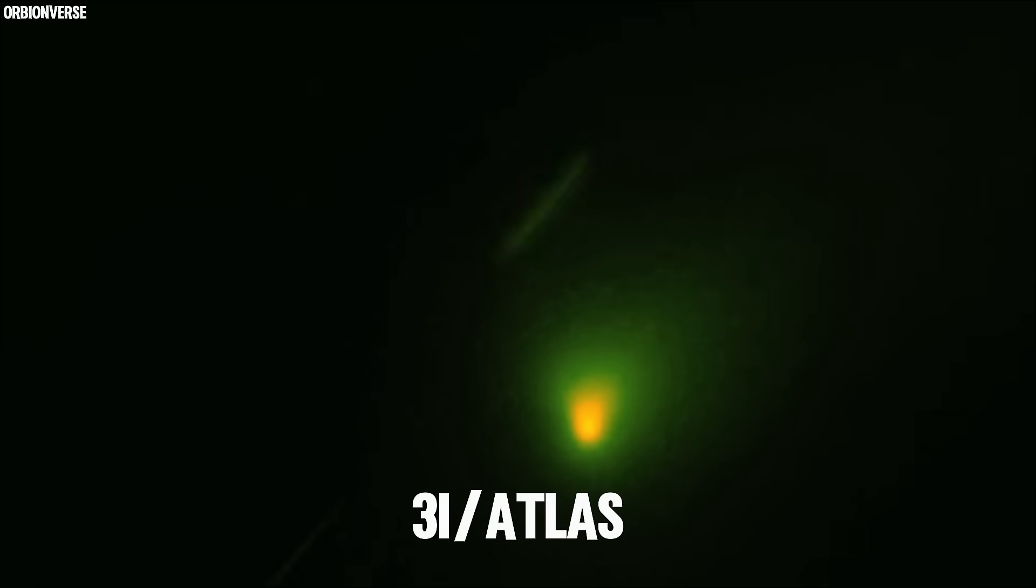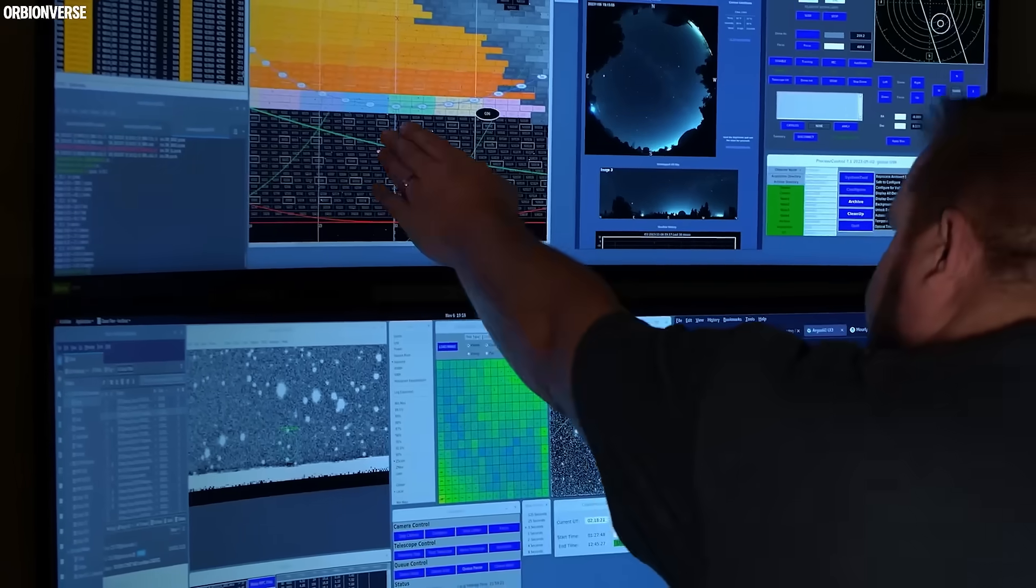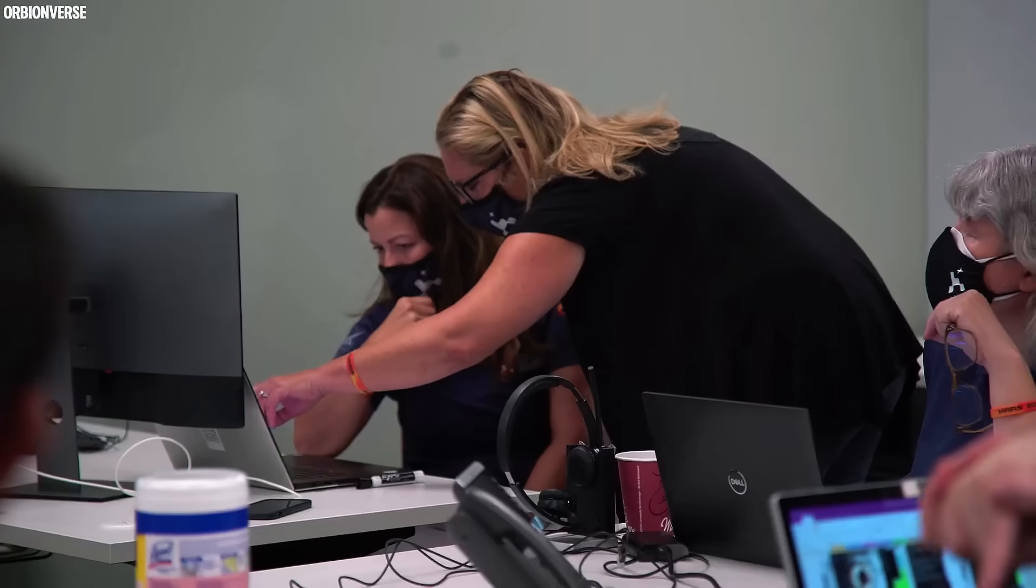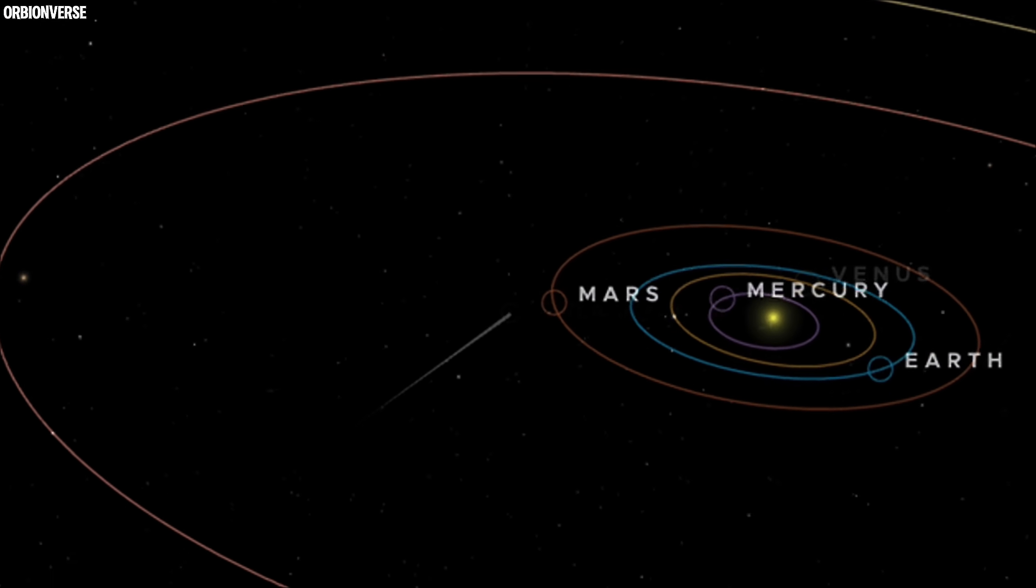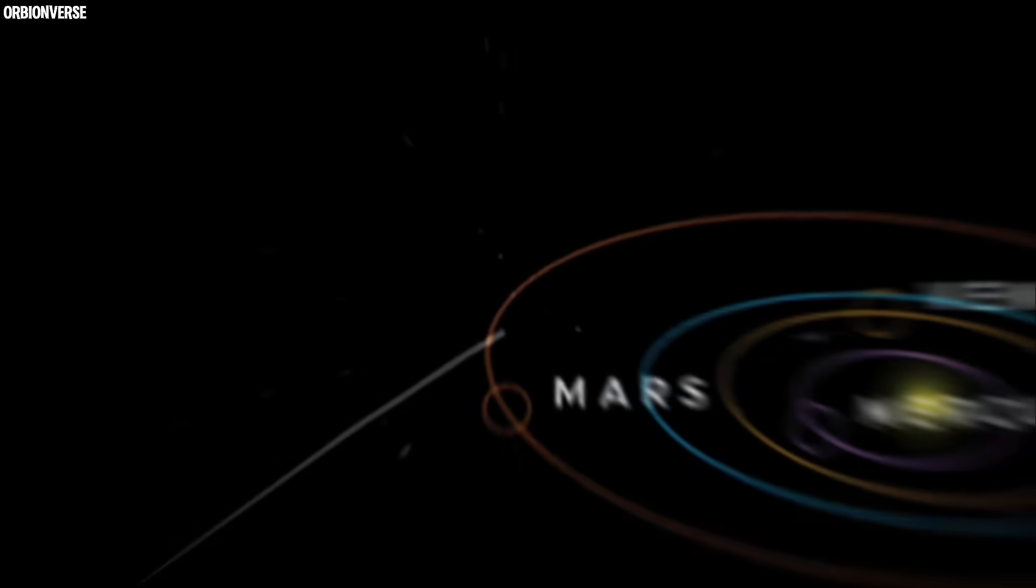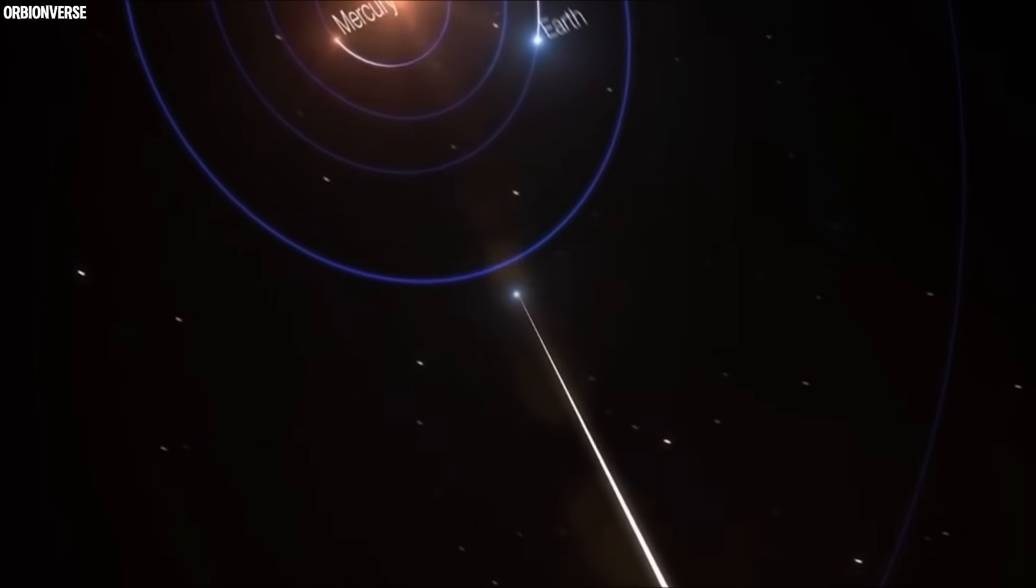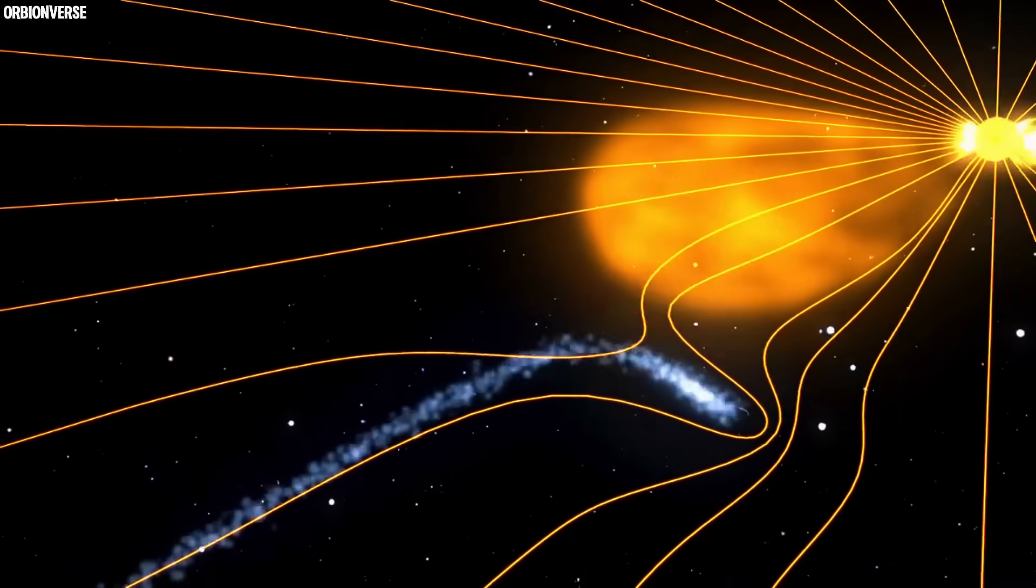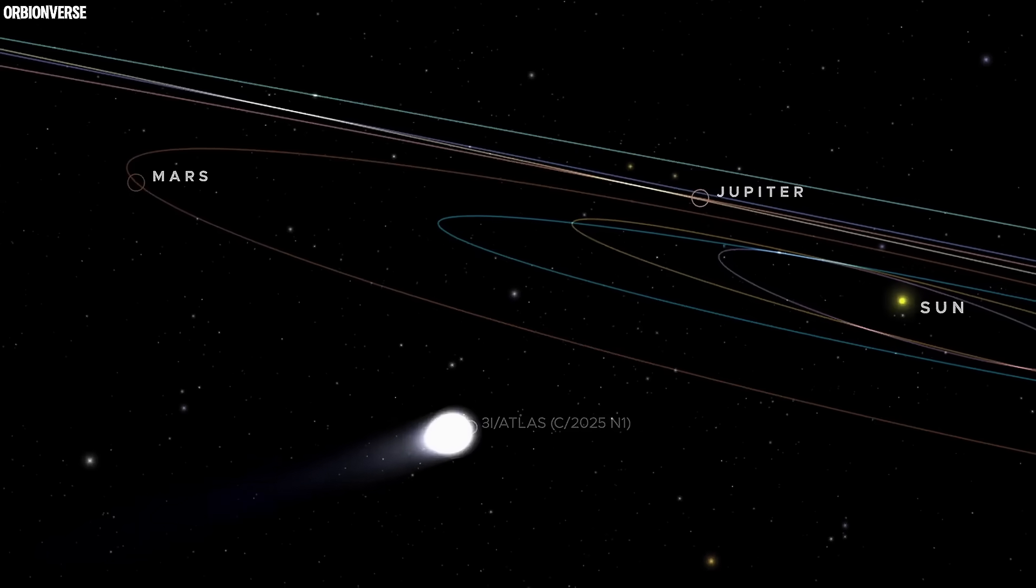For months, the name 3I/ATLAS has echoed across observatories, mission control rooms, and science forums. An interstellar visitor cutting through our solar system on a one-time journey has already passed Mars and is now heading toward the blazing heart of our cosmic neighborhood, the Sun. But just before it vanished behind the solar glare, something happened that no one was quite prepared for.